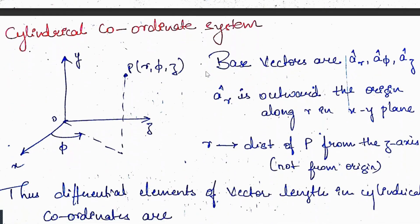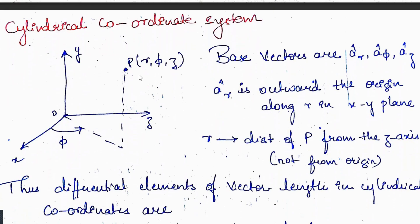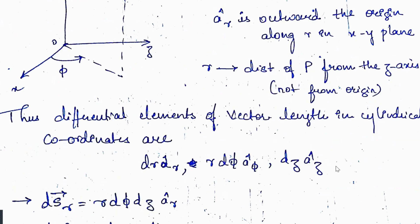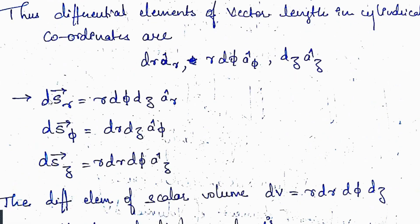Cylindrical coordinate system: here we consider the xyz plane with a point P having coordinates r, φ, and z. The base vectors are âr, âφ, and âz. âr points outward from the origin along r in the xy plane. Let r be the distance of P from the z-axis. The differential element of vector length is: dl = dr·âr + r·dφ·âφ + dz·âz. The differential surface areas are: dSr = r·dφ·dz·âr.